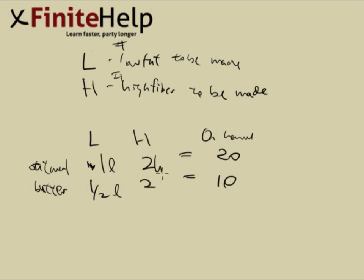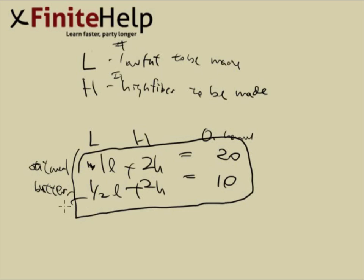Here's L and here's H. We just add them, and here's our system of equations. Now we just need to solve. The easiest thing is to subtract the equations, so we have one half L equals 10, L equals 20. If L is 20, then H is 0. So he is going to make 20 low fat cookies and zero high fiber cookies.